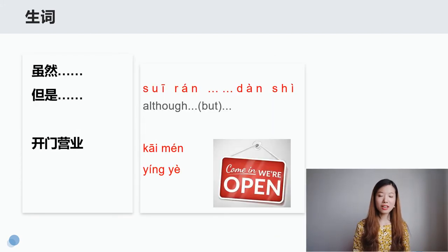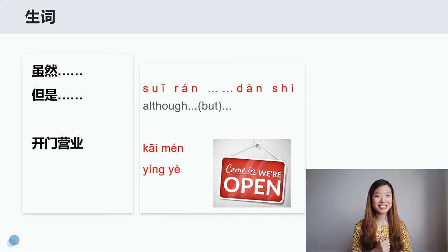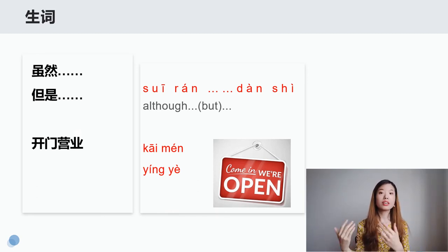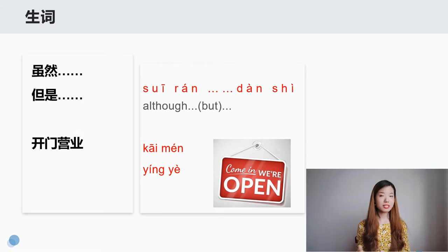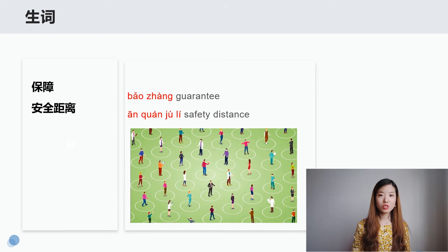好，我们接着来看虽然但是，我们复习一下。虽然但是是什么意思呢？虽然我很累，但是我还是来上课了。好，那我们来看下面这个生词，开门营业。开门我们都知道，今天要给大家介绍的新词叫做营业，就是 going in the business。比如说营业了，we've already opened。跟我读：虽然但是，开门营业，很好。